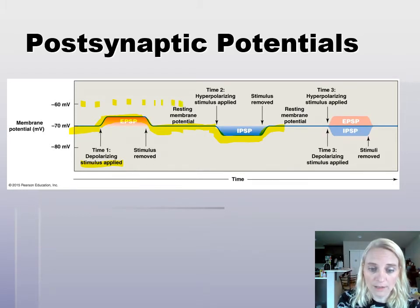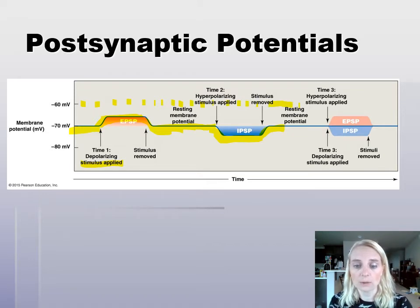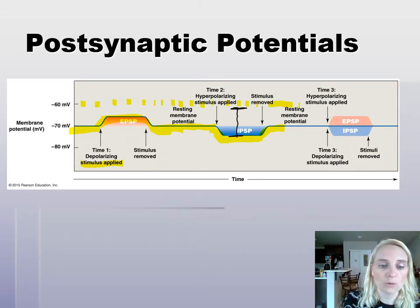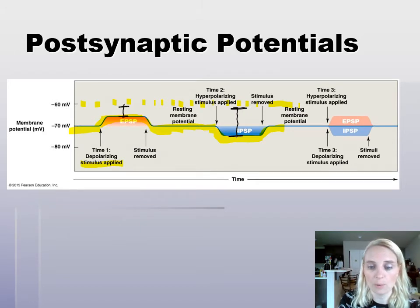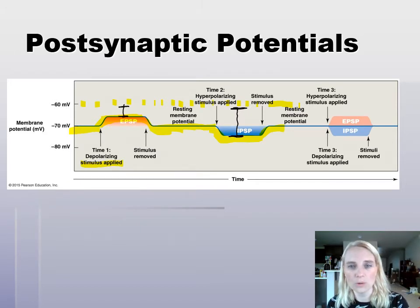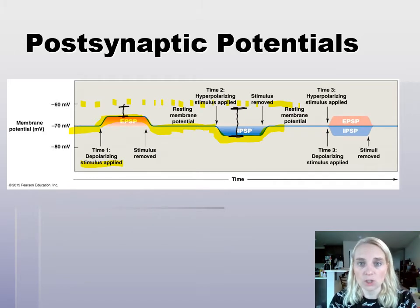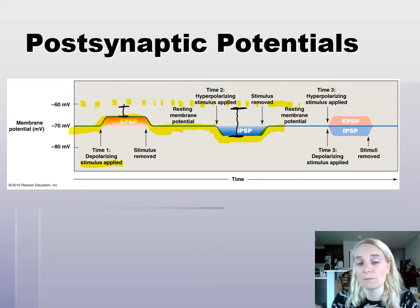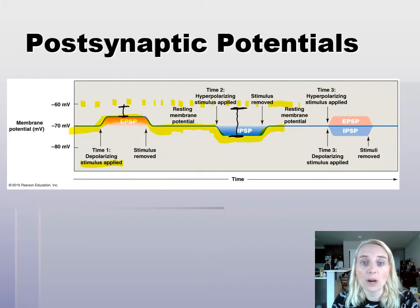If threshold is up here, we are now further away from getting to that point — as opposed to an EPSP, where we are closer. So we are comparing the signals that show up at the postsynaptic cell: how close are we getting to threshold? If we're making it closer, that's an EPSP. If we're making it further away — changing that transmembrane potential — then we are inhibiting it. That's where the EPSP and IPSP naming comes from.